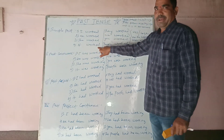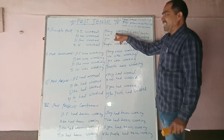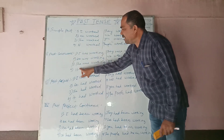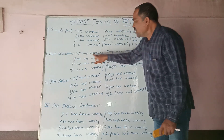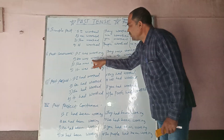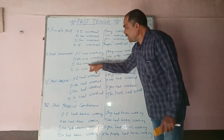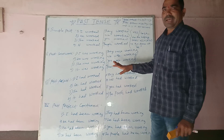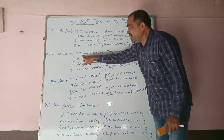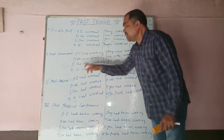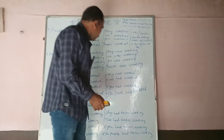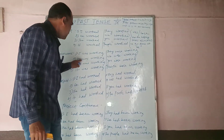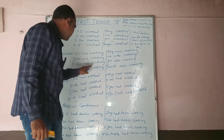Likewise, in past continuous, after using the singular pronoun, what we have to do — the helping word 'was' must be taken. For example: I was working, he was working, she was working, it was working. So in past continuous with a singular pronoun, we always use 'was'.